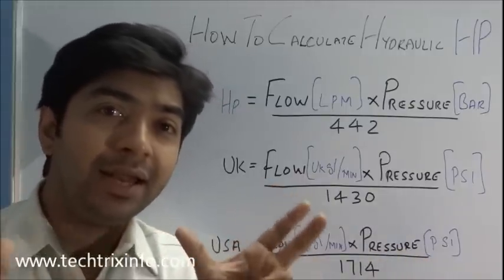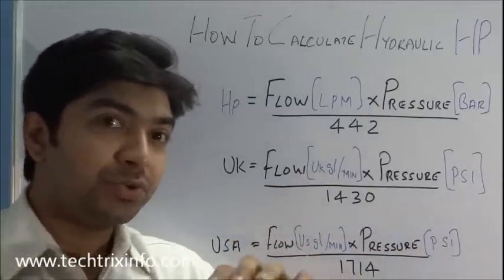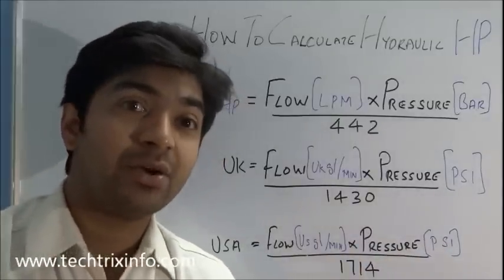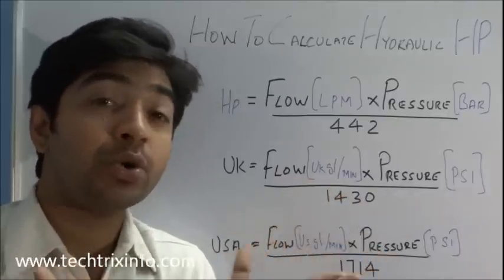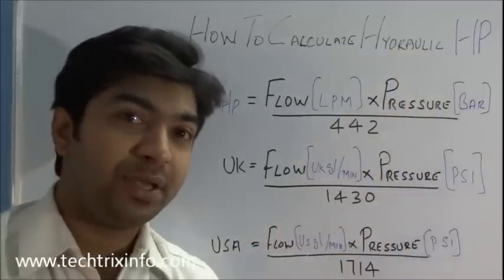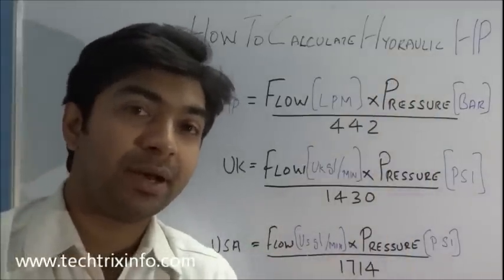It needs some amount of power to run the whole hydraulic system or the hydraulic equipment related to that. So that power requirement in horsepower is called the hydraulic HP. If you take a construction equipment like a JCB machine or a backhoe loader machine, there is a prime mover or an engine which actually supplies the power.